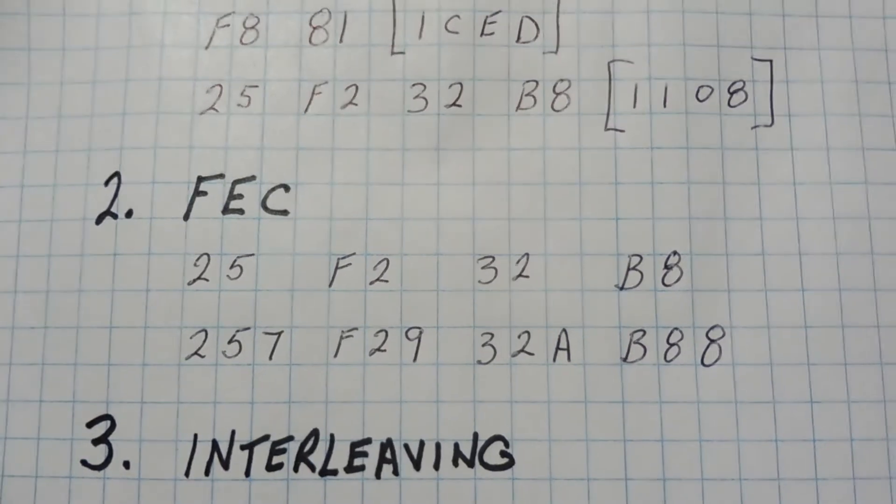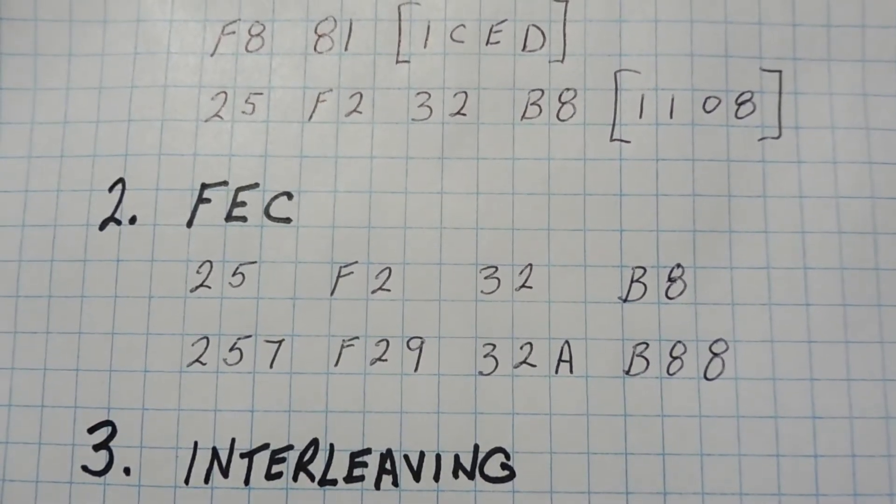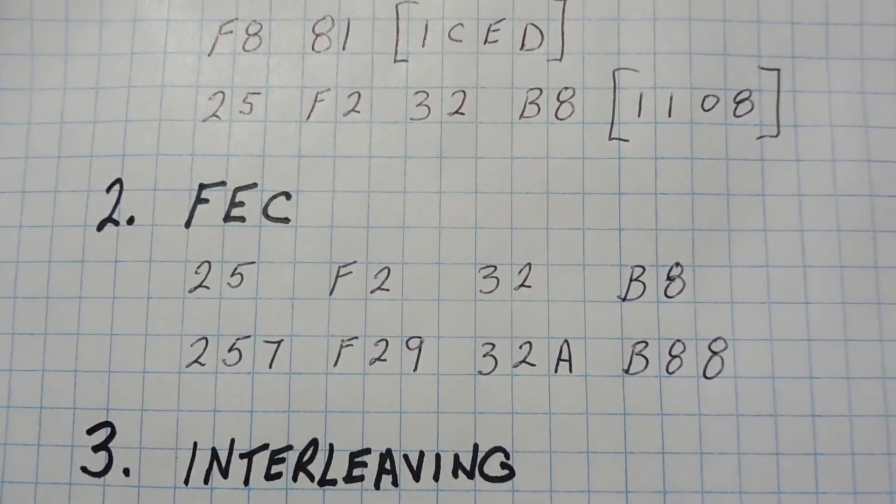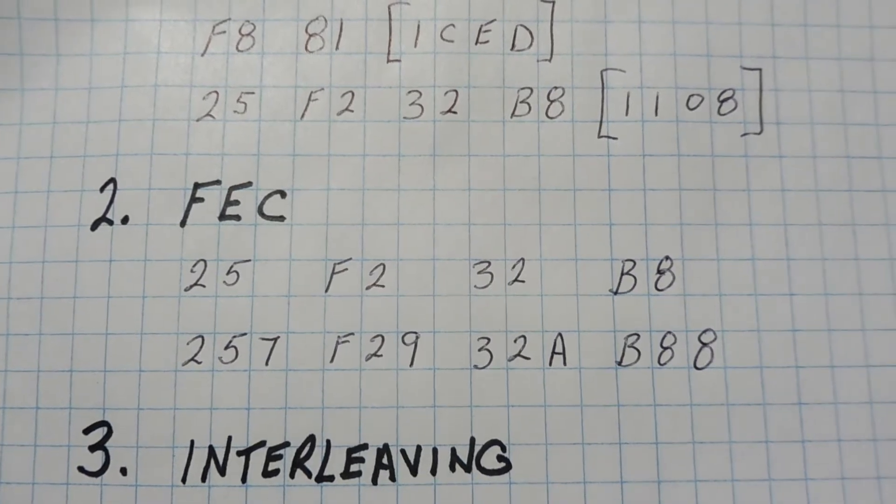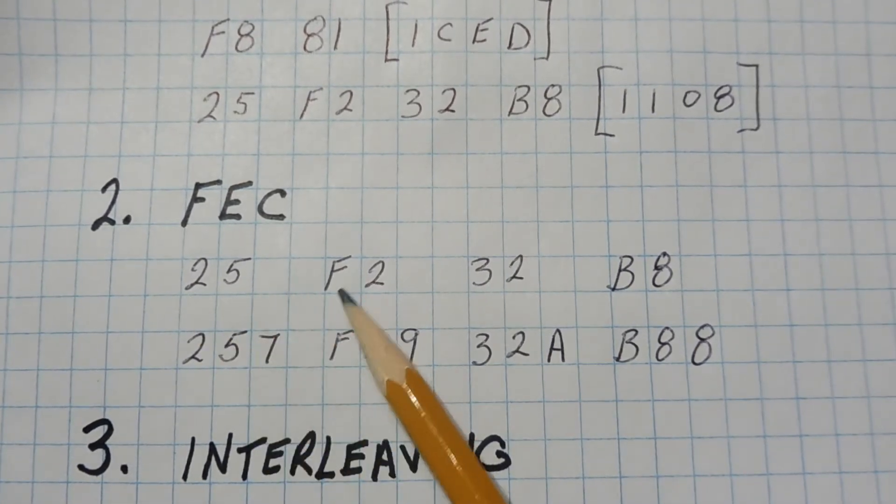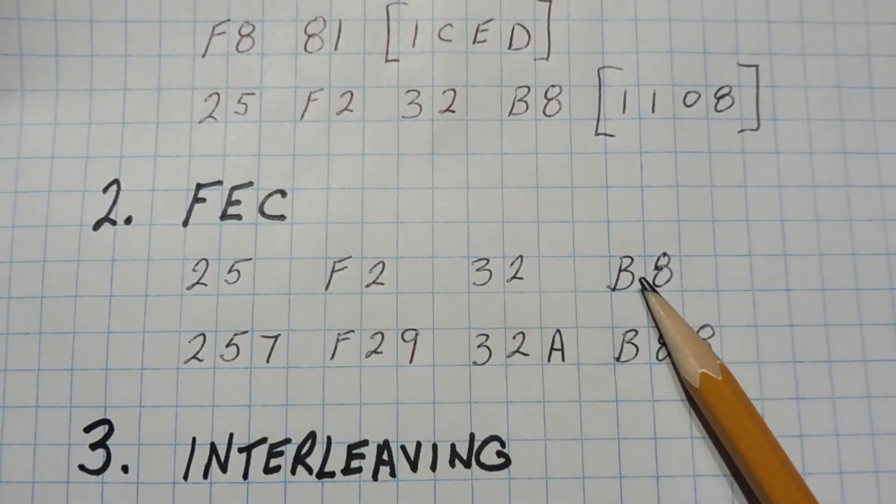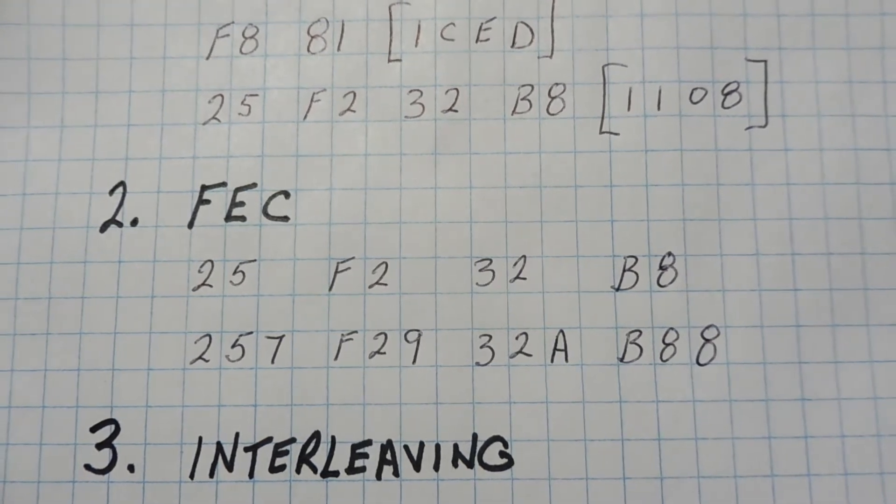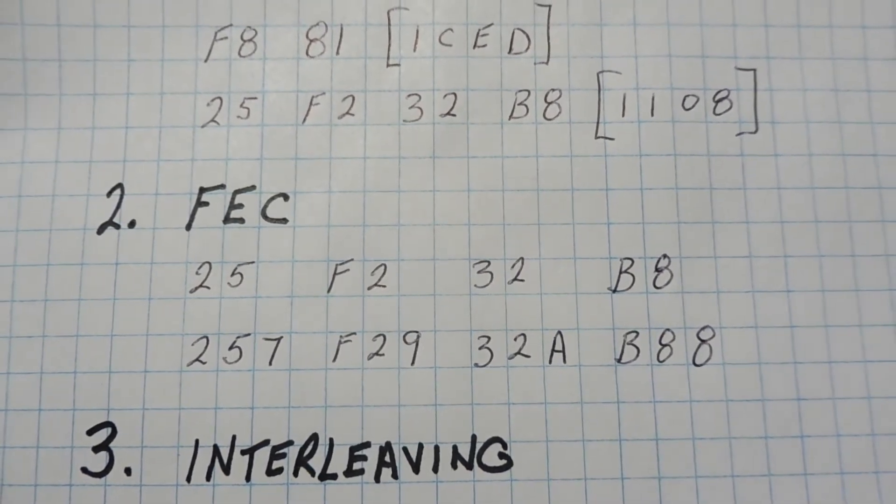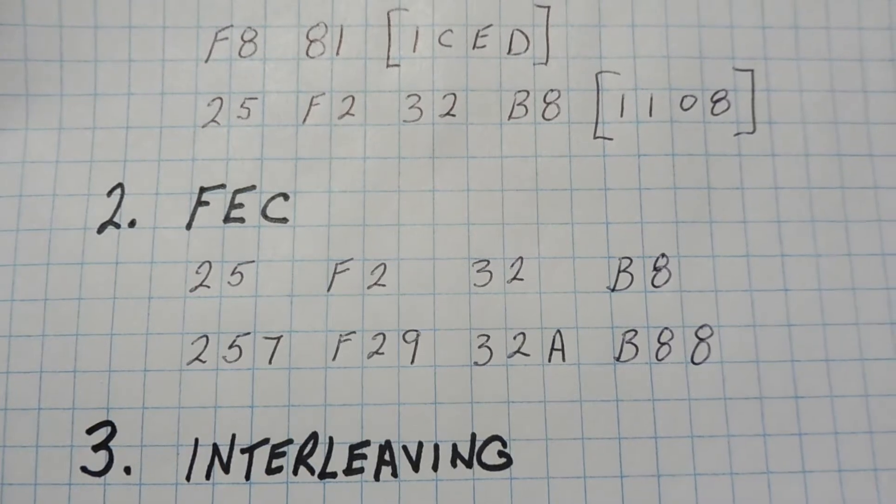Now in this video, we're going to look at FEC, that's Forward Error Correction, and that's a data error correction protocol, and we want to send these bytes, 2-5, F2, 3-2, and B8. Now before we could send these bytes, we have to encode these bytes. We have to add on four more extra bits. Now these are parity bits or check bits.